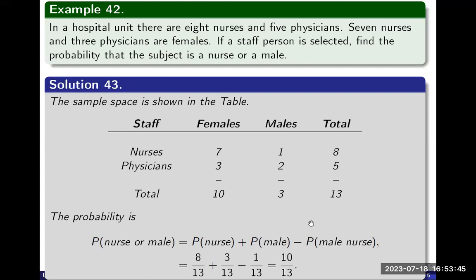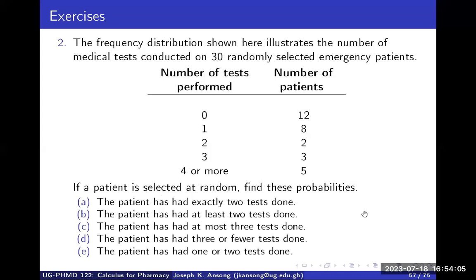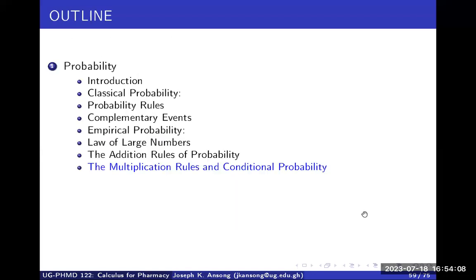Because the events are not mutually exclusive, we have to subtract to avoid double-counting. Try your hands on some of these exercises — determine whether the events are mutually exclusive. In the next video, I will cover the multiplication rules and then conditional probabilities.